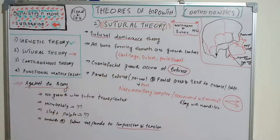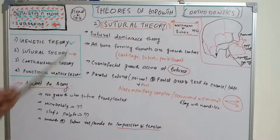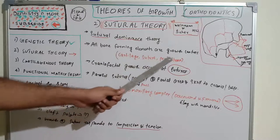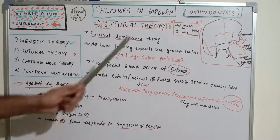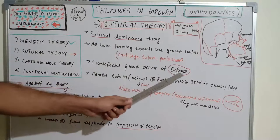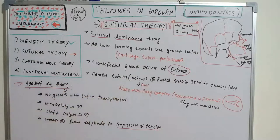Sutural theory was given by Weinmann and Sicher in 1952. As per this theory, all bone-forming elements are growth centers — that is, cartilage, sutures, and periosteum — and the craniofacial growth occurs at sutures. This is the key point: craniofacial growth occurs at sutures.